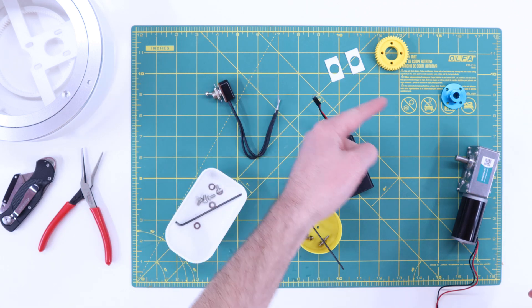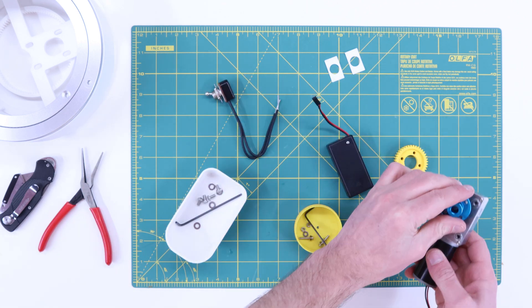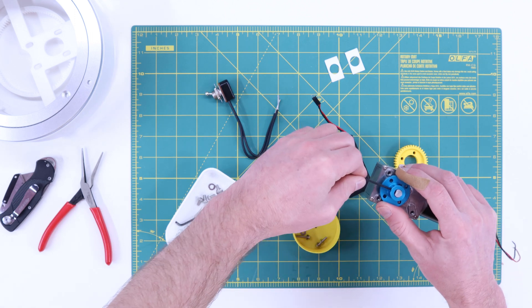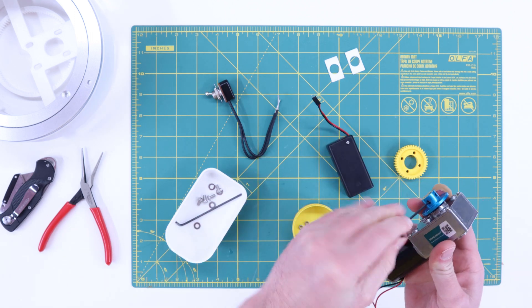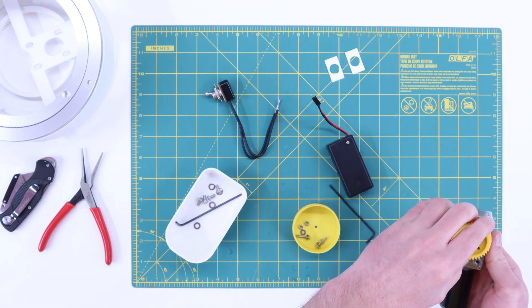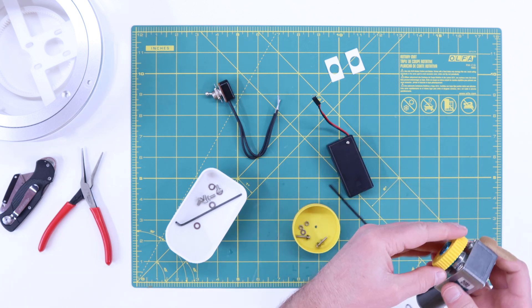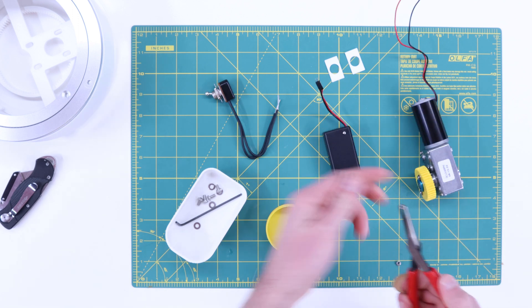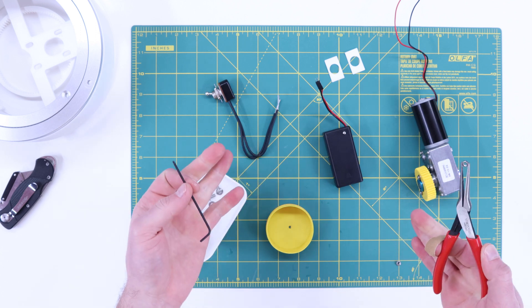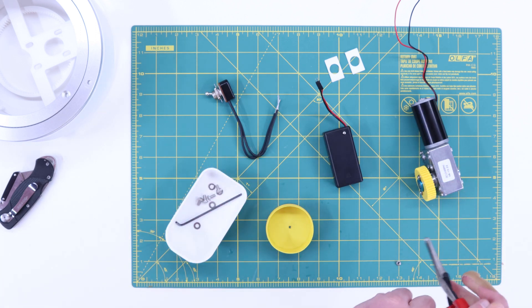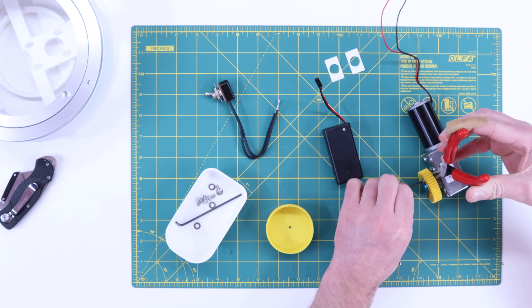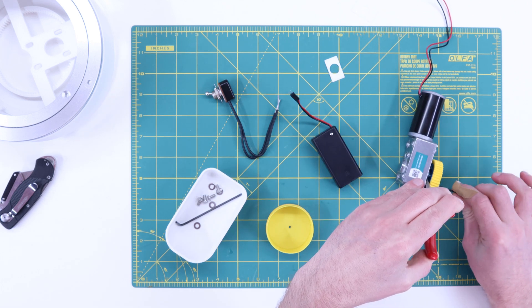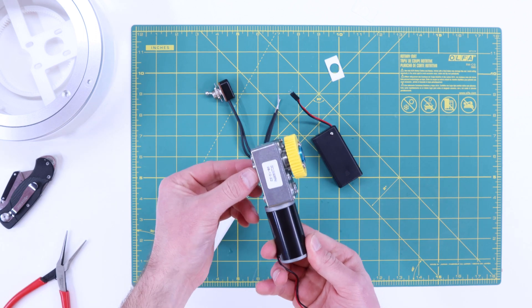First step is attaching a gear and coupler to the motor. This isn't the best design for manufacturability, but oh well. We've got a gear attached to the motor.